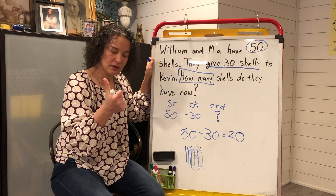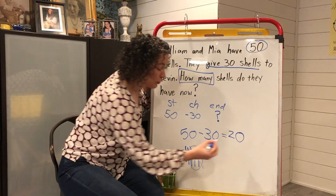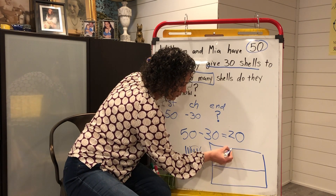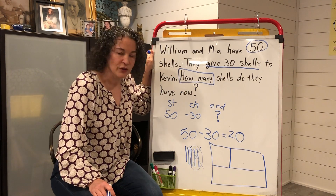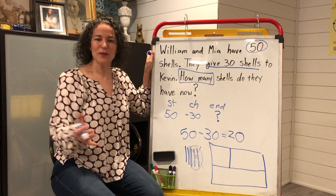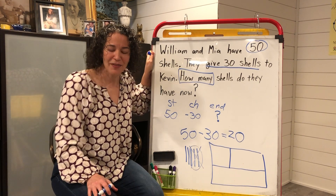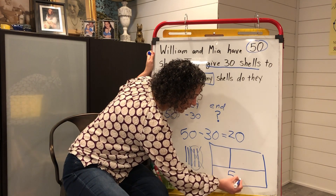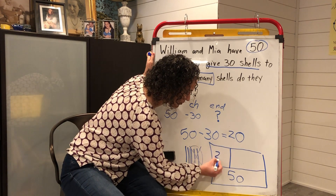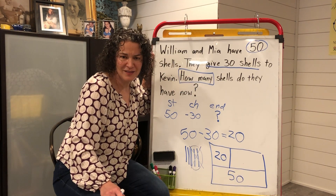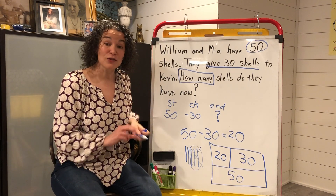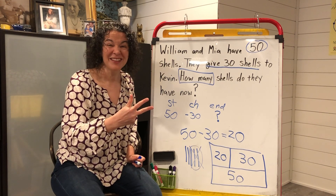Now I want a bar model. You make a big rectangle, cut it in half, and split one piece into a section. I've got 50, 30, and 20. What's the biggest number? 50 is the biggest number, so 50 gets the biggest box. Which is the smallest number? 20 is our smallest number, so 20 gets the smallest box, which means 30 is left over and goes in the medium box. You just solved the subtraction word problem — you wrote a number sentence, drew a quick pick, and filled in the bar model. Nice job!